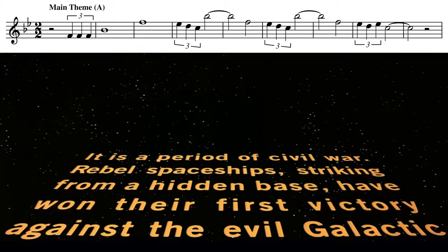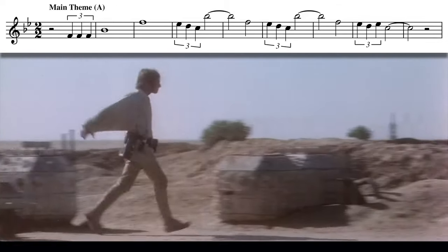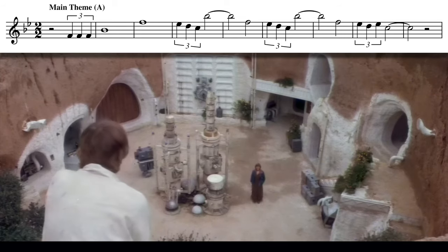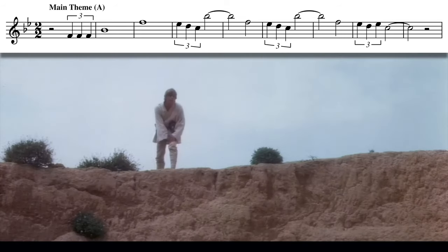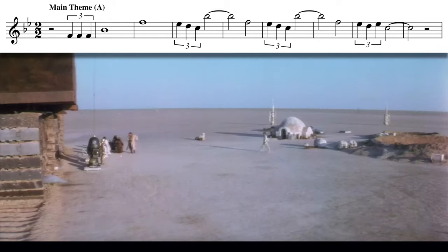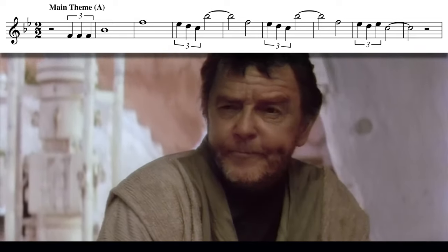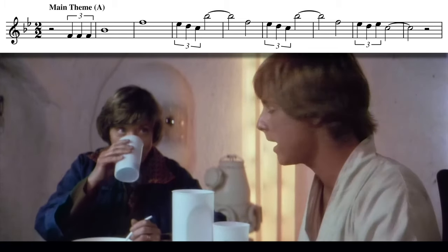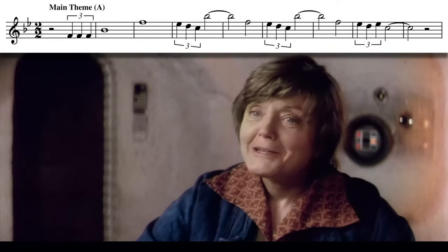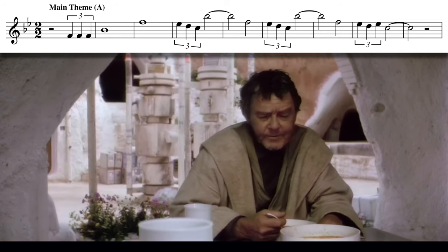After Williams introduces us to the theme in the opening text crawl, he doesn't play it again until we see Luke. Here we can see that Williams mainly associates the main theme with Luke throughout the film. When we meet Luke for the first time, he plays the theme several times so we can associate it with him. Then he doesn't play it again until another important moment — not while Luke is whining about his life, and not while Luke is eating dinner with his aunt and uncle. He plays it once Luke leaves and his uncle non-committally says he'll let Luke leave after the next harvest.